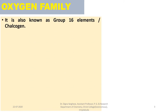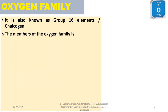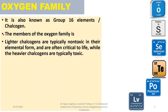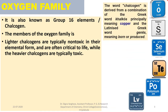The members of the Oxygen family are Oxygen, Sulphur, Selenium, Tellurium, Polonium, and Livermorium. Lighter chalcogens are typically non-toxic in their elemental form and are often critical to life, while the heavier chalcogens are typically toxic. The word chalcogen is derived from the Greek word 'Chalcos', principally meaning Copper, and the Latinized Greek word 'Genes', meaning Born or Produced.